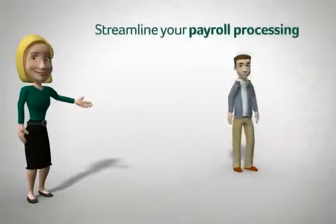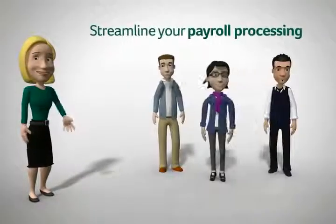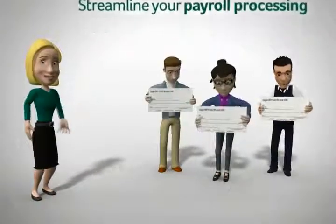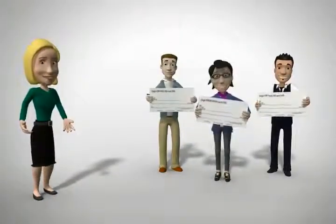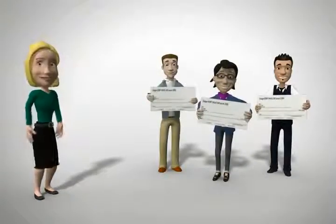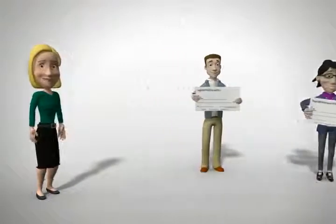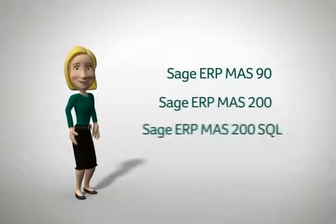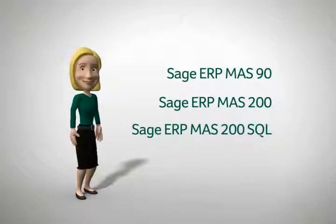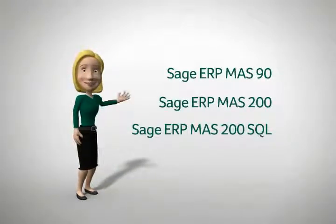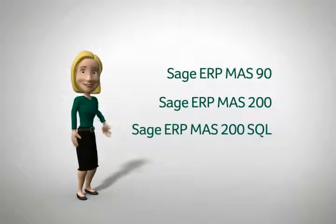The new payroll functionality in Sage ERP MAS 90 and 200 4.5 is designed to streamline your payroll processing so that you can rest easy knowing that you are making the appropriate deductions, and employees are getting their paychecks accurately and on time. To see what else Sage ERP MAS 90 and 200 version 4.5 can do for your business, please take a look at some of the other videos and additional 4.5 materials. Just click on whichever you'd like to see next.